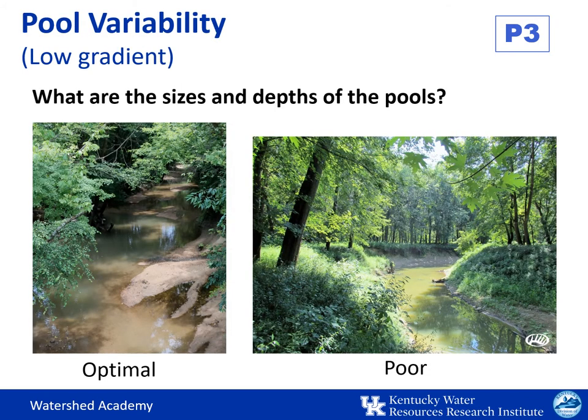For low gradient streams, we'll be looking for an even mix of different types of pools for a good diversity of aquatic habitat. These will include pools that are large and shallow, large and deep, small and shallow, and small and deep. When the majority of pools are small and shallow or absent, this habitat indicator is rated as poor.